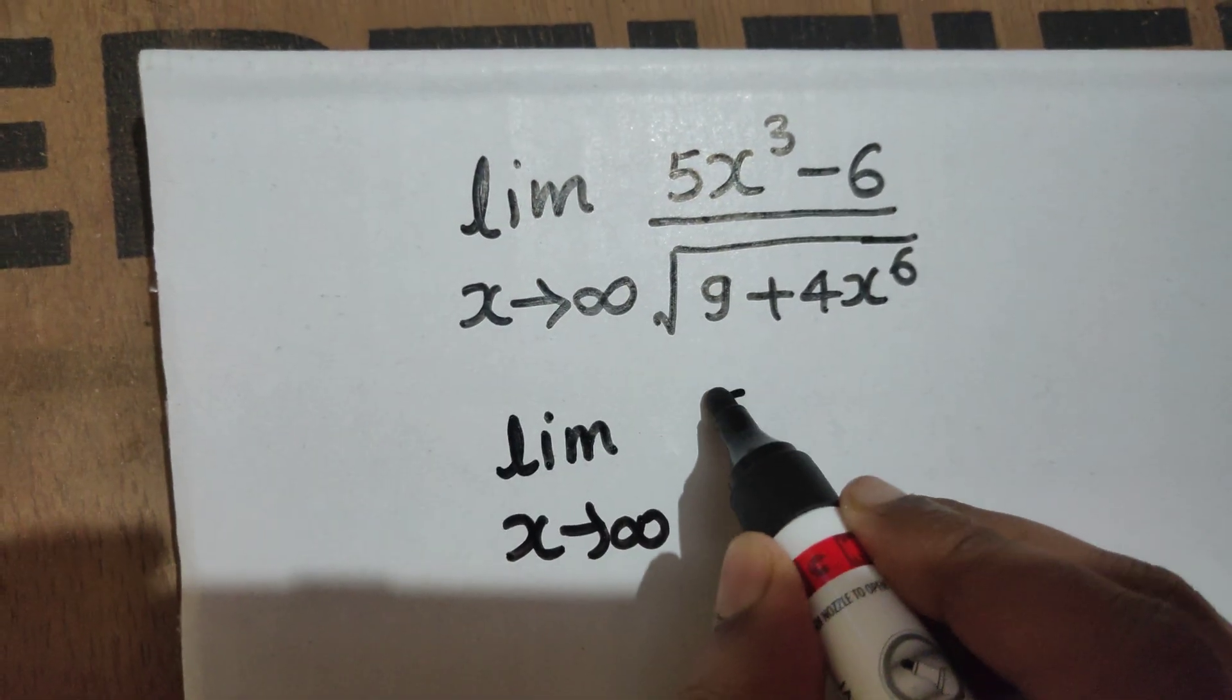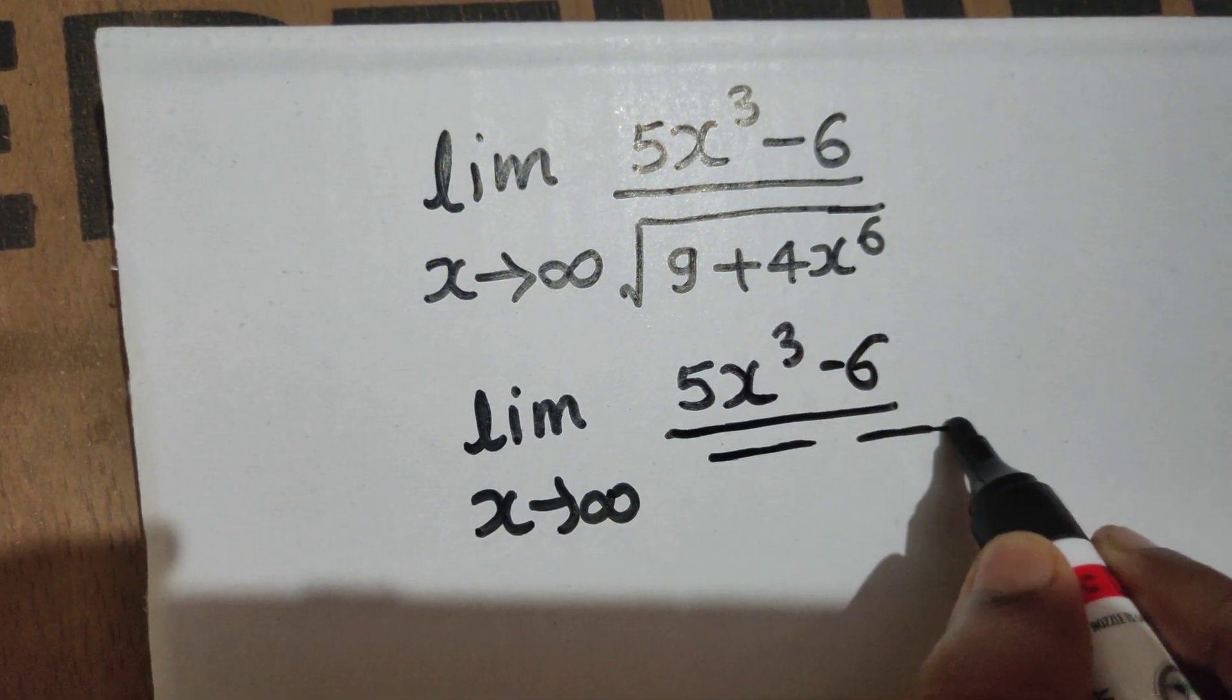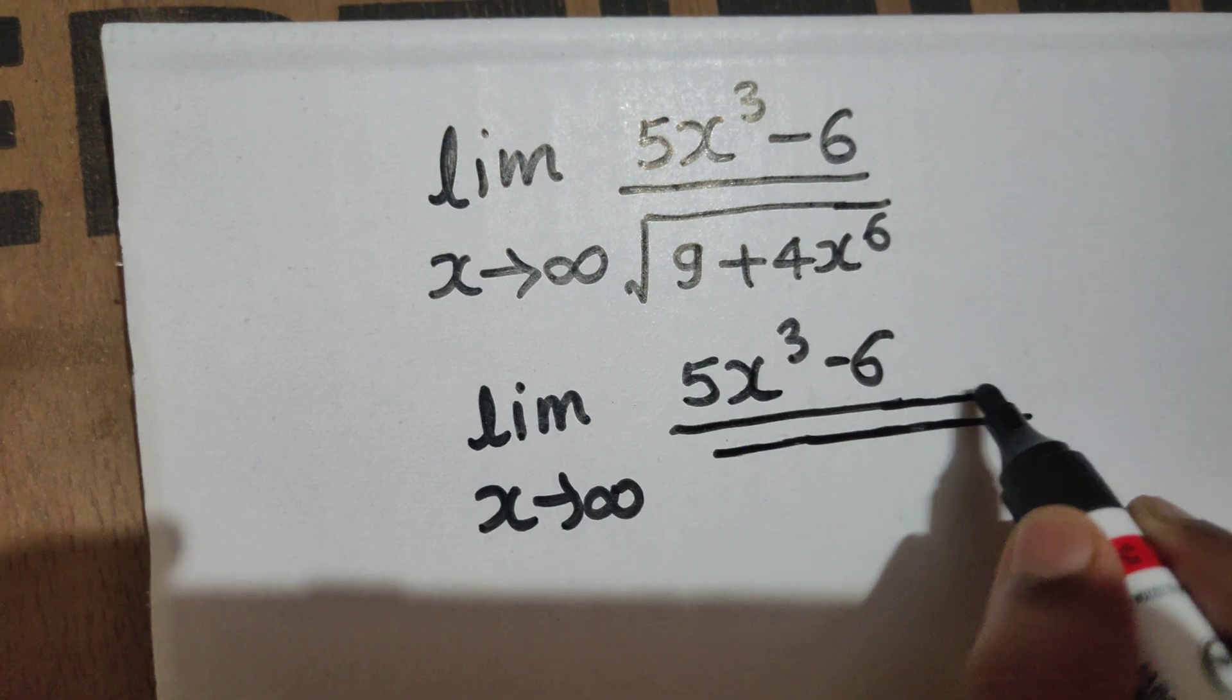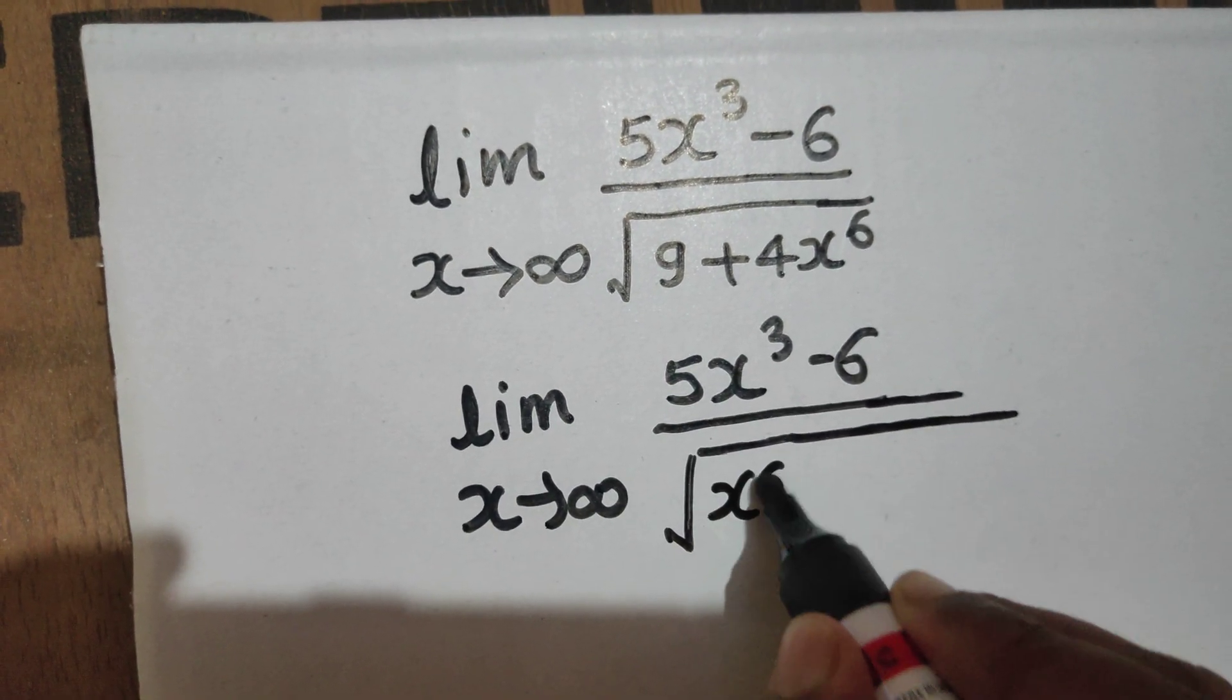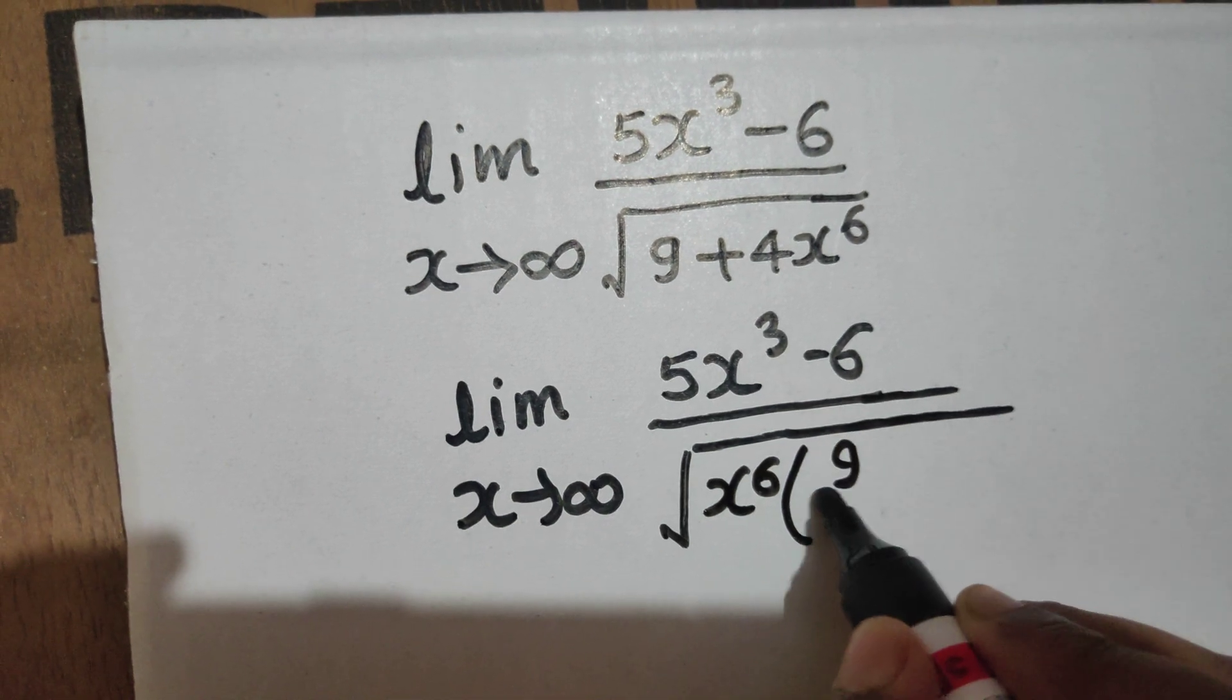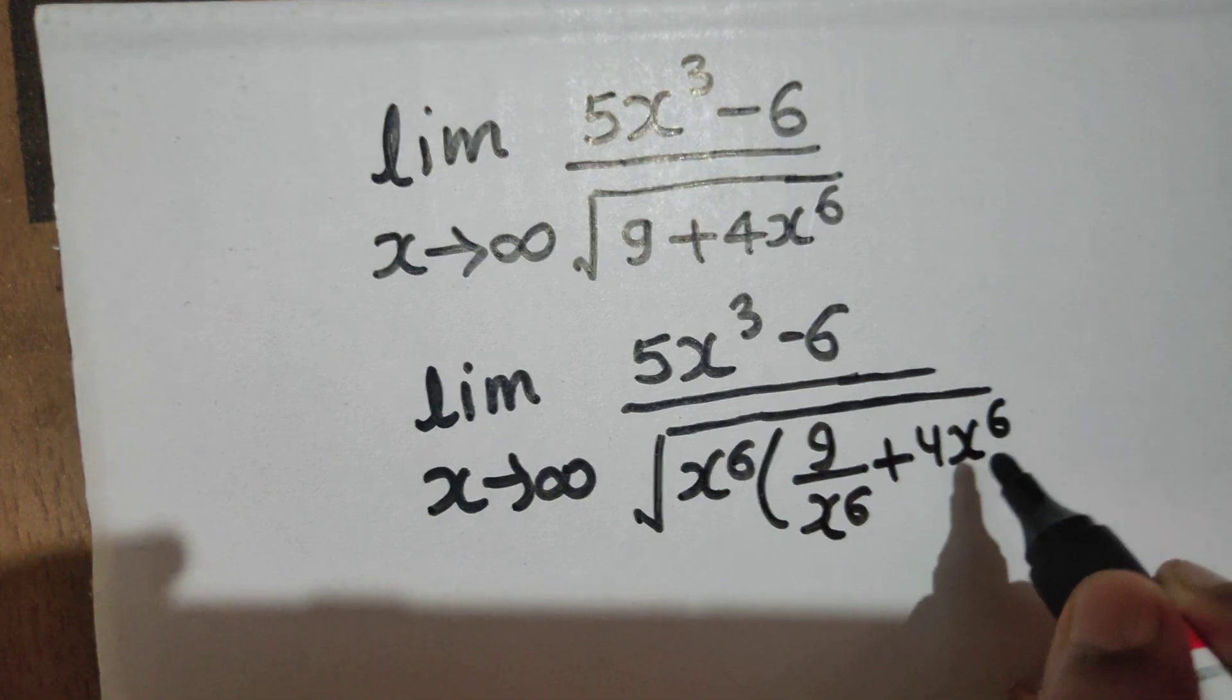x⁶ will get common. You will get 9 divided by x⁶ plus 4x⁶ divided by x⁶. Fine enough, because if you multiply this inside, you get the same thing again.